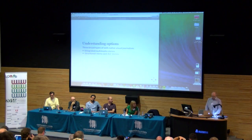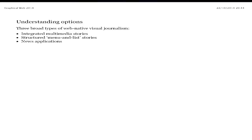Broadly, there are three types of things we do. Integrated multimedia stories. The menu and list story, which is basically anything that has structured content different from the blob of text we usually write. And then finally, the thing we're most familiar with and probably the most involved — what we might generically call a news application, or data visualization.